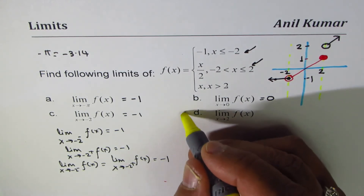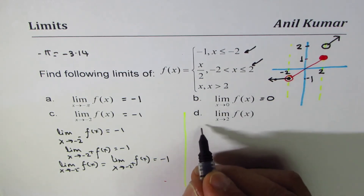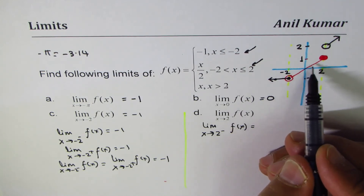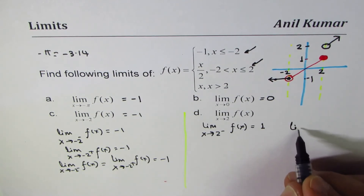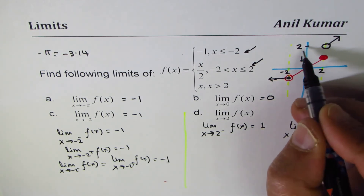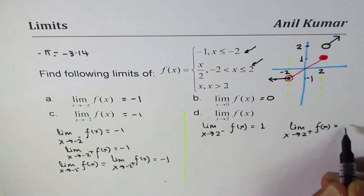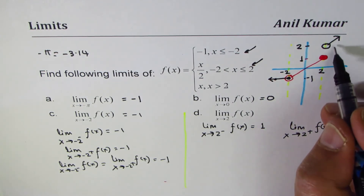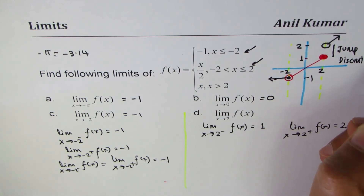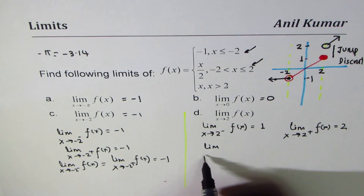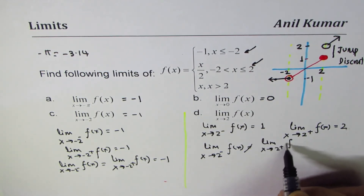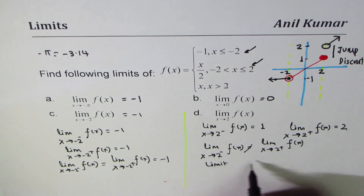For the limit as x approaches 2: approaching from the left along the second piece, the value approaches 1, so the left-hand limit is 1. Approaching from the right along the third piece, the value approaches 2, so the right-hand limit is 2. Since the left-hand limit (1) does not equal the right-hand limit (2) — there is a jump discontinuity — the limit does not exist as x approaches 2.